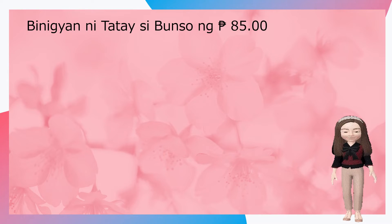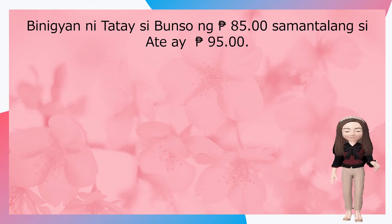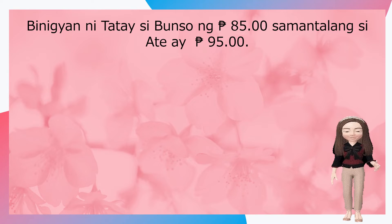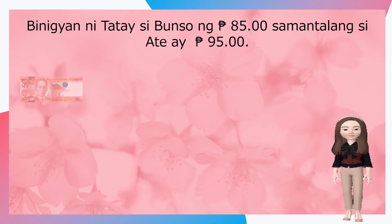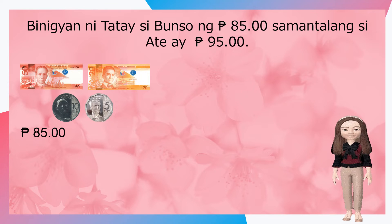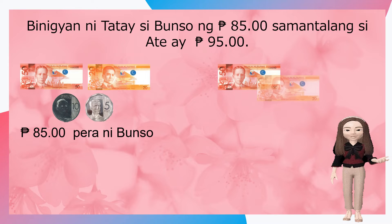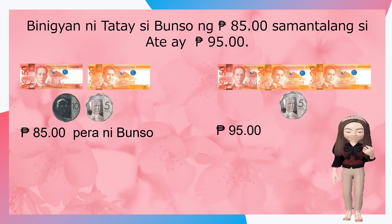Binigyan ni tatay si bunso ng 85 piso. Samantalang si ate ay siyam napot limang piso. Sino sa dalawa ang mayroong mas maliit na perang natanggap? Alamin natin sa pamamagitan ng paghahambing. Narito ang perang natanggap ni bunso — ito ay ang walumpot limang piso. Samantalang si ate ay mayroong siyam napot limang piso.